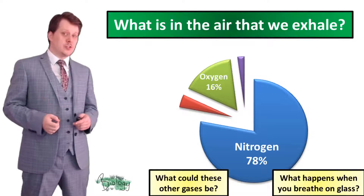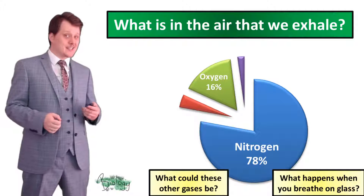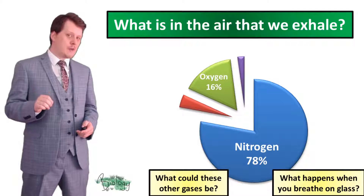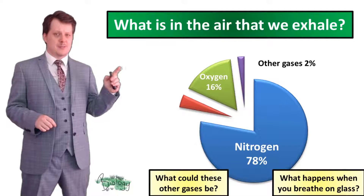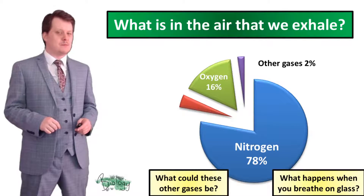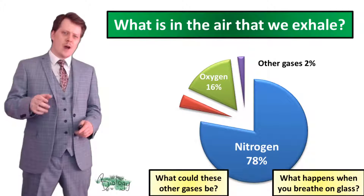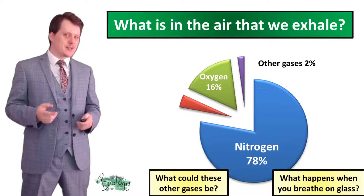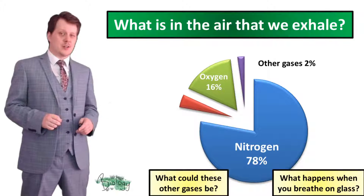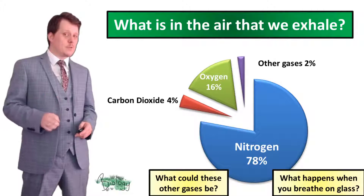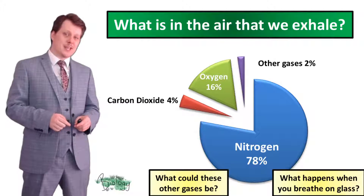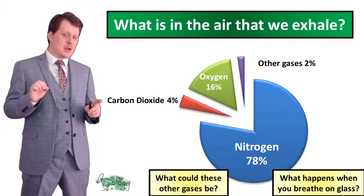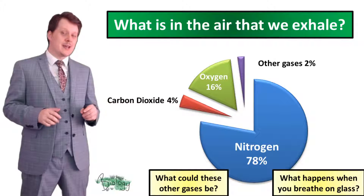The amount of oxygen has decreased — it's gone down from 21% to 16%. That oxygen has gone to the cells so they can carry out aerobic respiration. Our other gases have gone up by a percent. Think about what that other gas could be: what happens when you breathe on a piece of glass? The biggest increase on the pie chart is carbon dioxide, now at 4% — up from 0.04%. This links back to the aerobic respiration equation: oxygen plus glucose creates carbon dioxide and water.